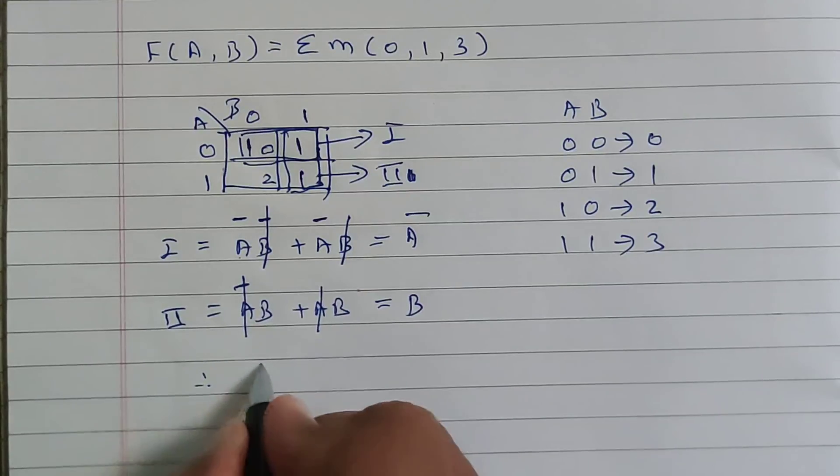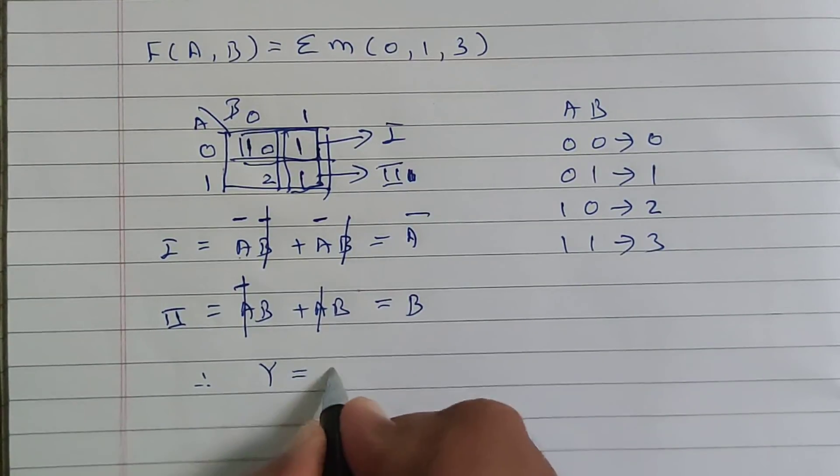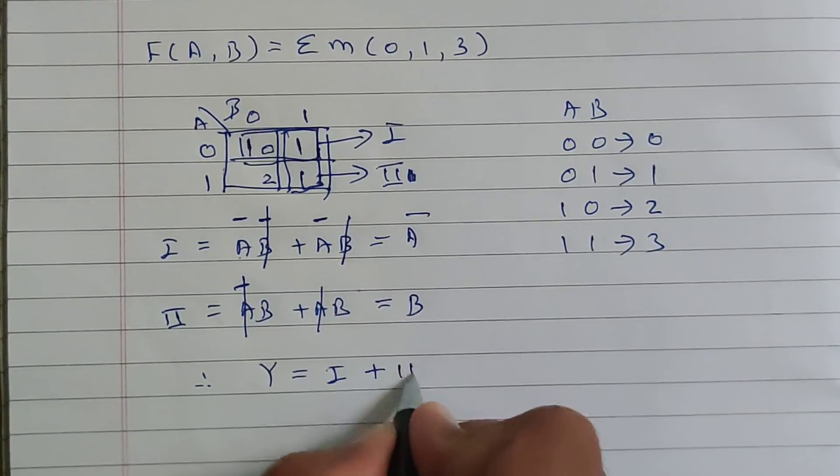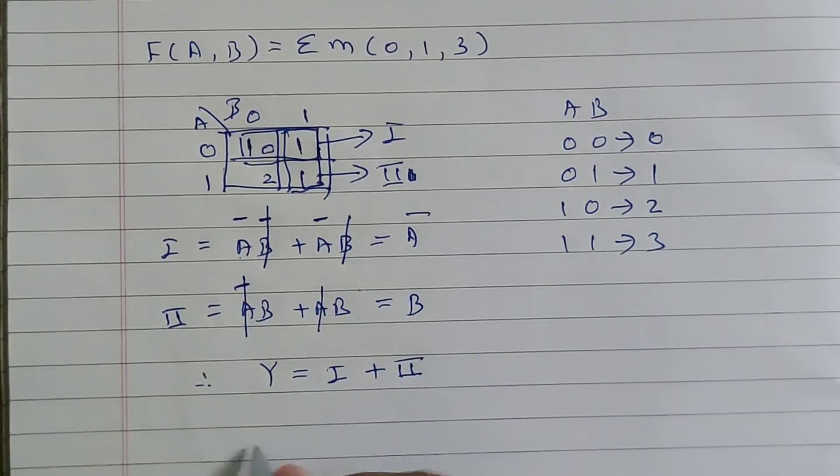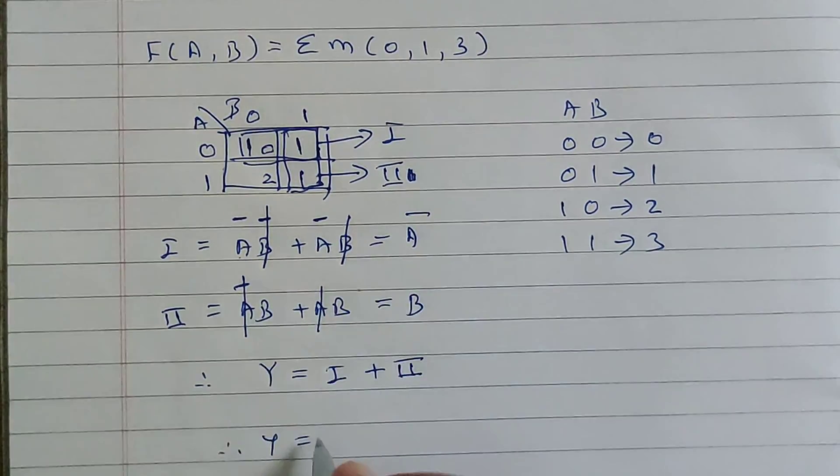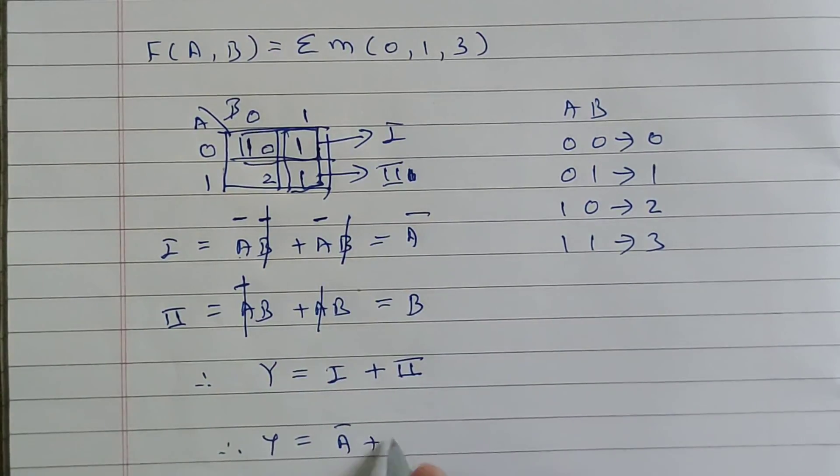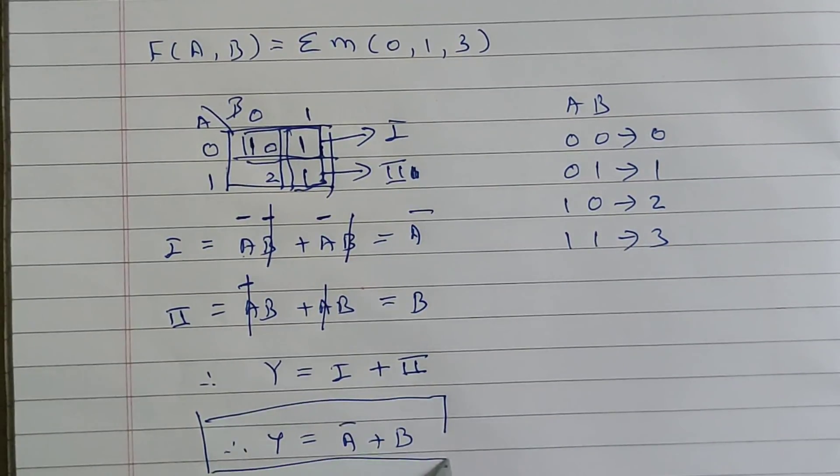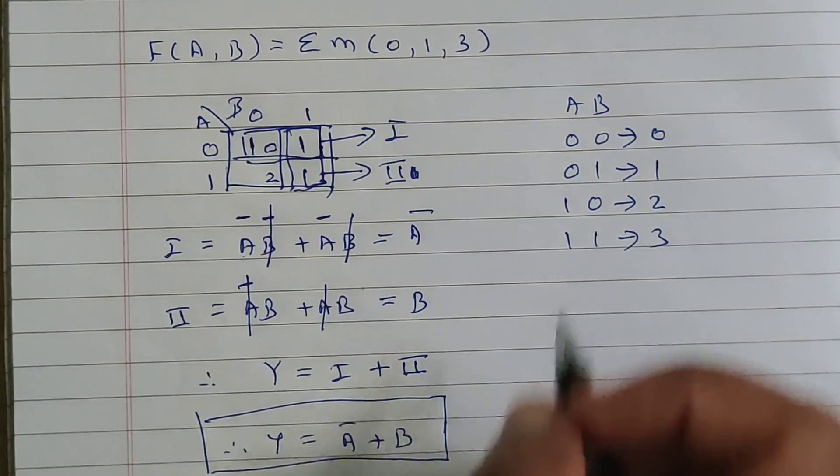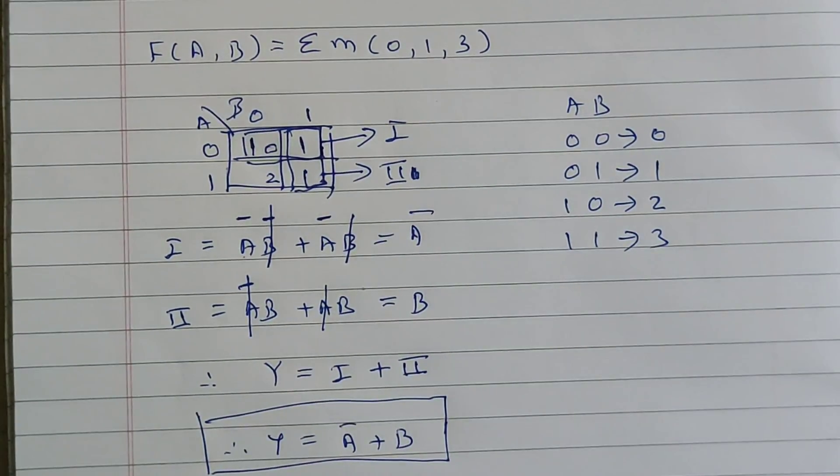Therefore, answer Y is addition of all groups, 1 plus 2. Now from group number one, we get A bar, and from group number two, we get B. And this will be our final solution: Y is equal to A bar plus B. In this way, we solve two variable k-maps. Thank you.